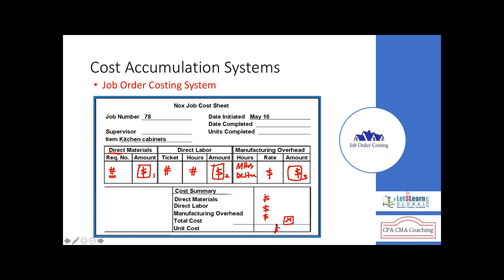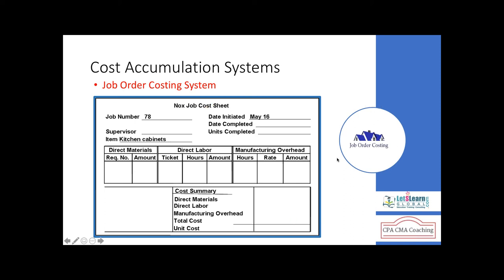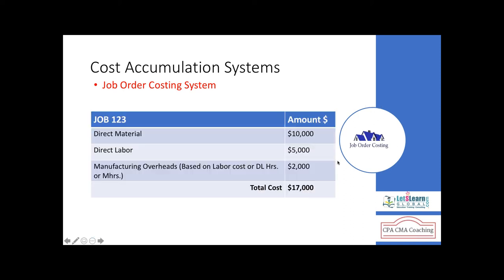With material cost, labor cost, and manufacturing overhead in hand, you can find the total cost and even the unit cost. Based on this, you charge the customer. We understand the job sheet, arrive at total job cost, and then add markup — our profit — to charge the client.